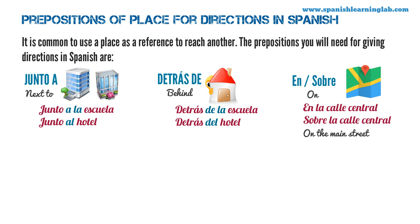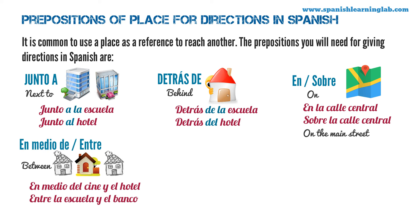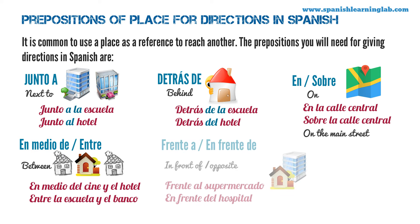En and sobre — on/at. En la calle central. Sobre la calle central. En medio de — in the middle of. Entre — between. En medio del cine y el hotel. Entre la escuela y el banco. Frente a and en frente de — in front of. Frente al supermercado. En frente del hospital. Let's review the pronunciation of these prepositions: junto a, detrás de, en, sobre, en medio de, entre, frente a, en frente de.